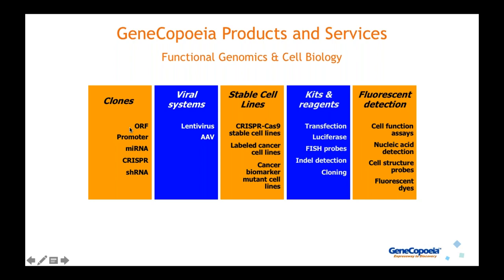In addition to ORF clones, we also have clones encoding gene promoters, mostly for human and mouse but also for rat. We've also expanded to carry various microRNA solutions — precursors, inhibitors, and 3' UTR targets. We have a large collection of CRISPR plasmids and construction services, as well as genome-wide collections of shRNA clones for gene knockdown. We also have viral systems — mainly lentivirus and adeno-associated virus — and stable cell line products such as CRISPR-Cas9 stable cell lines, labeled cancer cell lines, and cancer biomarker mutant cell lines.